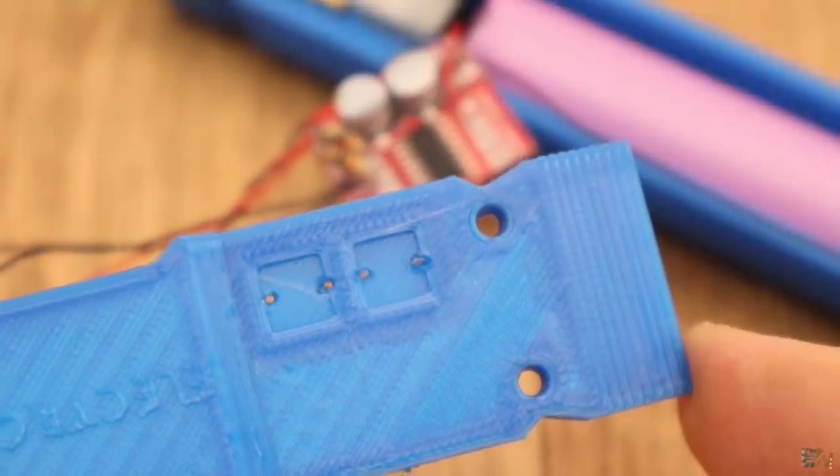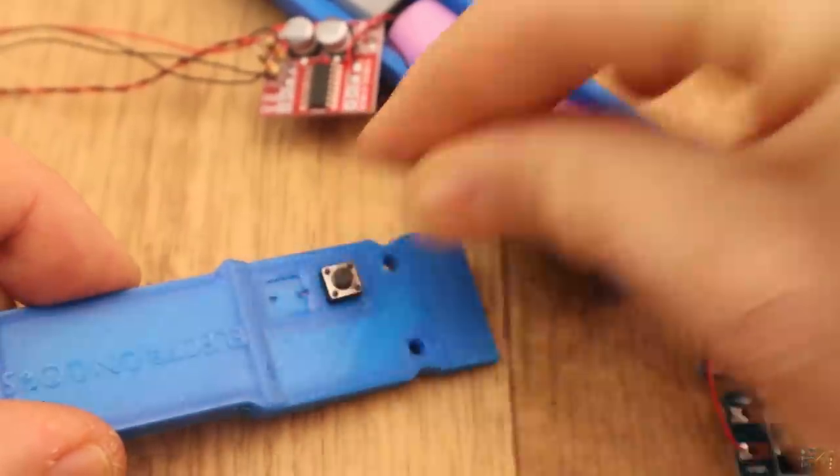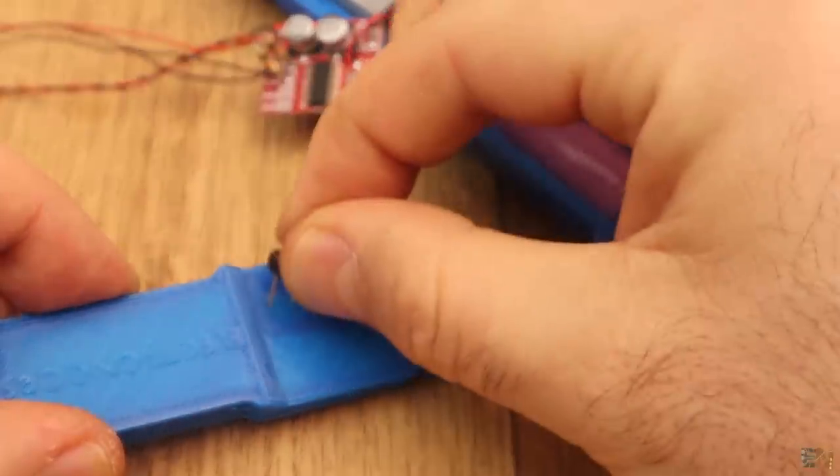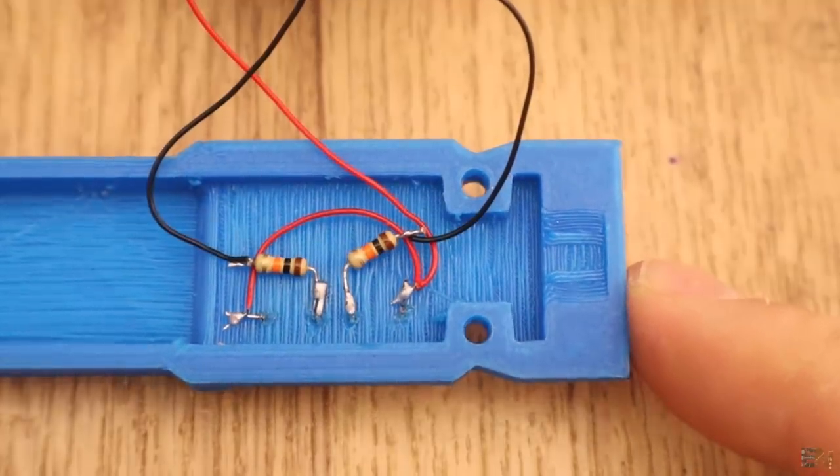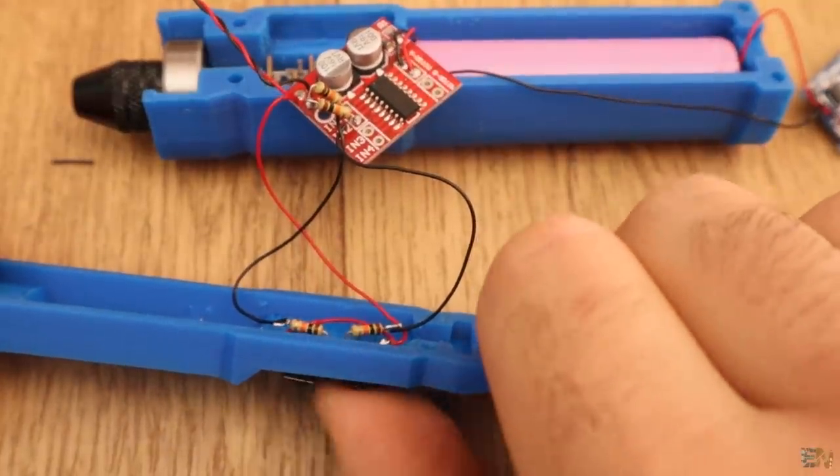Now I make these small holes on the top part of the case. I pass these kind of push buttons through these holes and I solder the wires and the resistors on the other side like this. Now solder these wires to the H-bridge module.